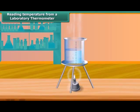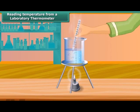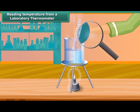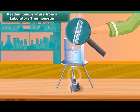Let us now measure the temperature of hot water kept in a beaker. Take a laboratory thermometer and immerse the bulb of the thermometer in hot water. See the shining thread of mercury moving up in the thermometer tube. After some time, the mercury thread will stop rising and stand at one place. Read the temperature on the thermometer tube which corresponds to the top of the mercury thread — this is the temperature of the hot water.